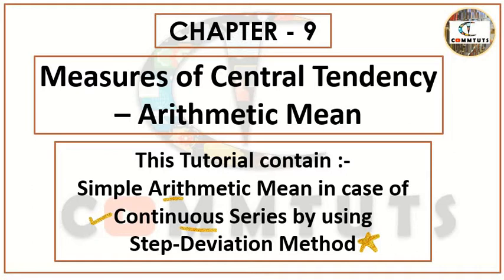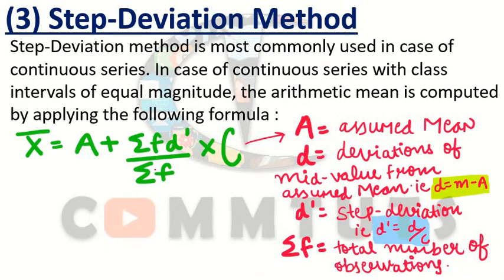Let us start today's session and understand how we calculate arithmetic mean in case of continuous series by using step deviation method. The step deviation method is basically an extended version of the shortcut method. It is the most commonly used method in case of continuous series, also called frequency distribution series, series of grouped data, or series with class intervals — these are the other names for continuous series.